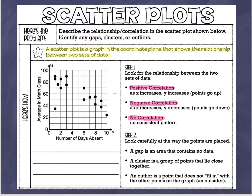Keep in mind that the points in a scatter plot are not going to be perfect. You're just looking for a general trend. Read the graph from left to right and ask yourself: are the points generally going up, going down, or just all over the place? This is very different from graphing linear equations, where points must be in a straight line with an exact repeated slope.